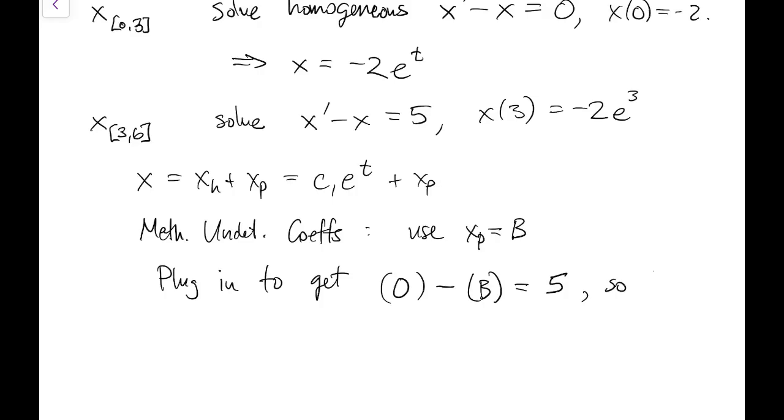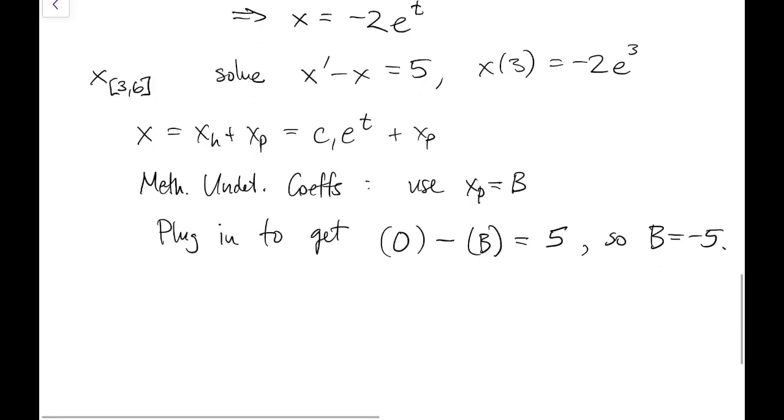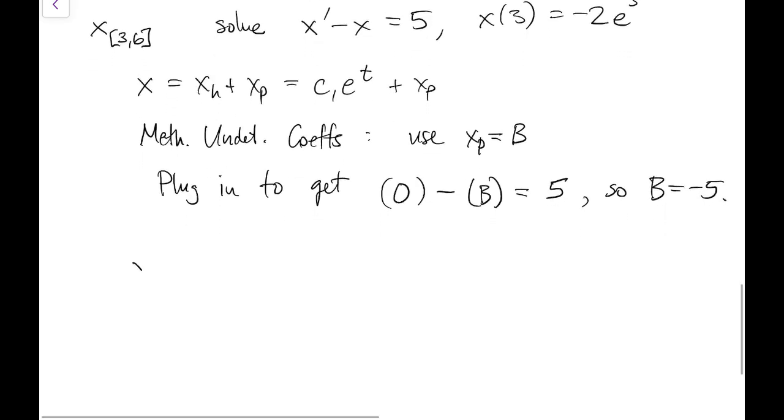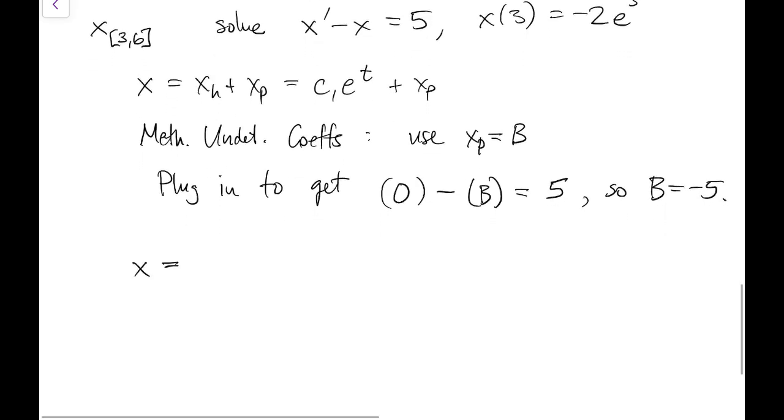So x prime is 0, xp itself is b, and this has to equal 5. Obviously then, b equals negative 5.